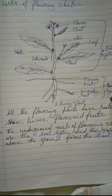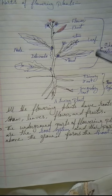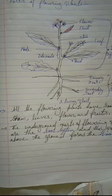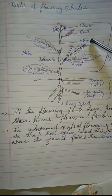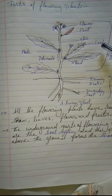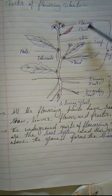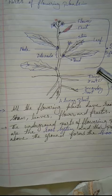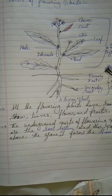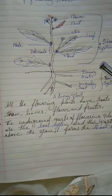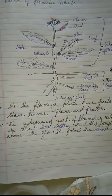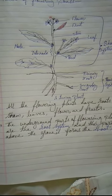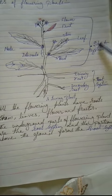All the flowering plants have roots, stem, leaves, flower, and fruits. The underground parts of flowering plants are the root system, and the portions above the ground form the shoot system.